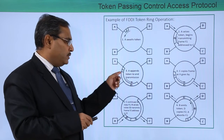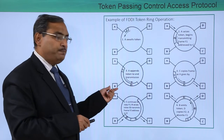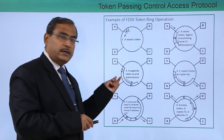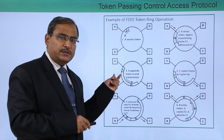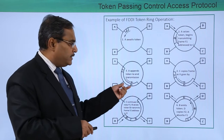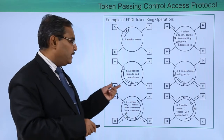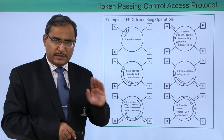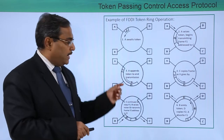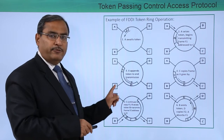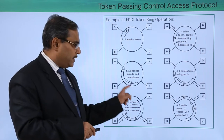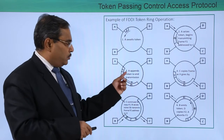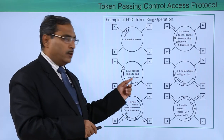When the frame was being transmitted in front of B, B tried to read the destination address of this frame. As the destination address written in this frame is not matching with the address of B, B understood that this frame is not for B. That is why it did not react to this frame passing in front of it. A appends the token to the end of the transmission.